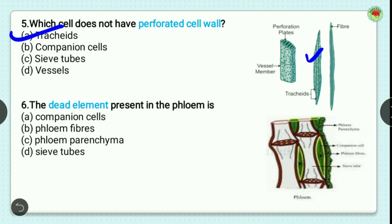Question number 6: the dead element present in the phloem is? Options are companion cell, phloem fibers, phloem parenchyma, and sieve tubes. Phloem parenchyma and sieve tubes are living cells that have a nucleus, except phloem fibers. Phloem fibers are the dead tissue present in phloem. So the correct option is option B, phloem fibers.